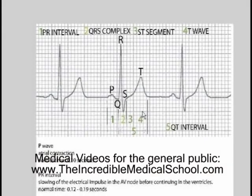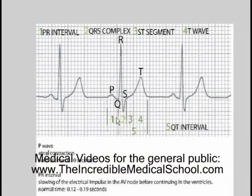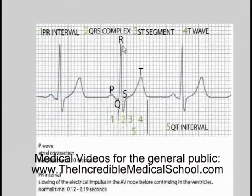The QT interval — remember, it should be less than half of the RR interval. So this distance from the Q to the end of the T wave should be less than half of the distance between one R wave to the next R wave.